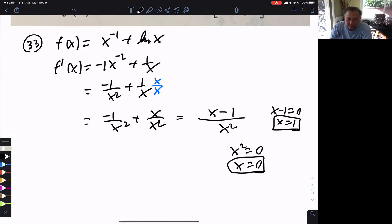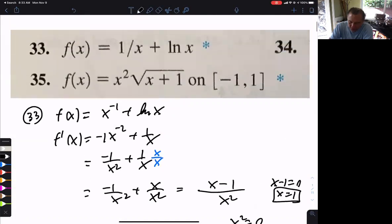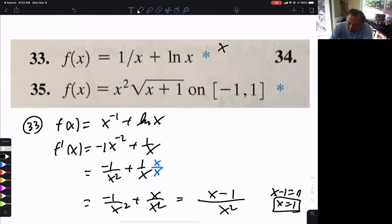Now, be careful. This is where you have to understand a couple of things. Let's look at the original function here. So we get critical points of 0 and 1, right? In the answer, they don't count 0.